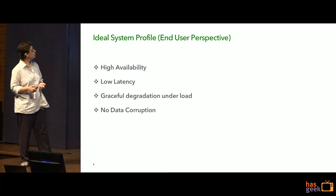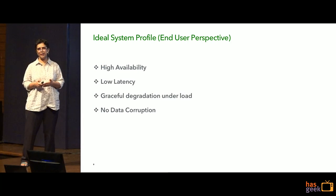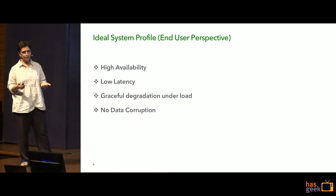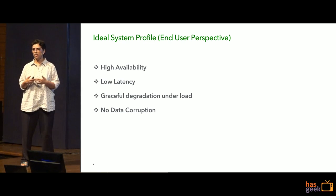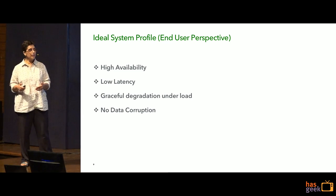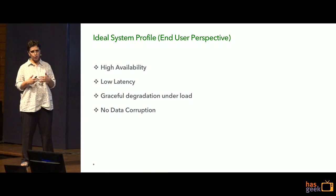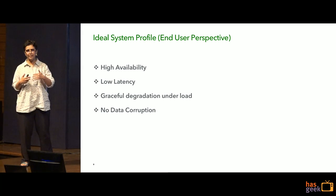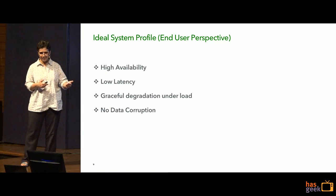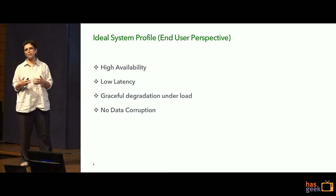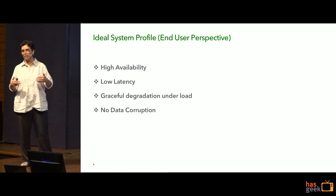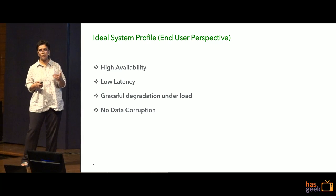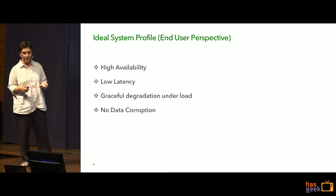Which brings us to what is an ideal system profile from an end-user perspective. You're looking at something that's highly available — no site downtimes. You're looking at low latency so that SLAs are met and customers give you a high NPS rating. You also look for graceful degradation under load so that you have proper alerting mechanisms to see how your system is starting to struggle even before it actually does, so you can mitigate for that. And you want to make sure there are no data corruption issues — you want atomic transactions so that if anything fails at an intermediate point, everything rolls back.